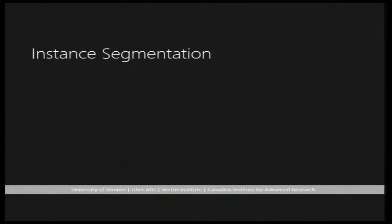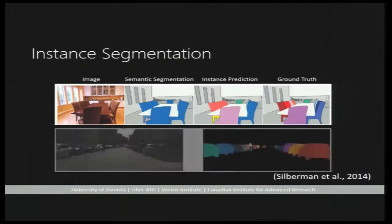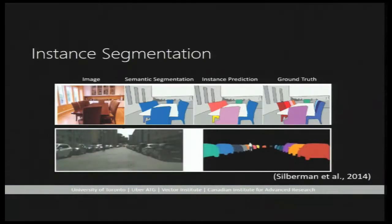Instance segmentation is a fundamental computer vision problem which aims to assign pixel level instance labeling to a given image. Here's an example of an indoor image. The second picture shows a semantic segmentation which assigns all chairs in the same class, and on the right is the instance segmentation. As you can see, object occlusion is usually the major challenge of this problem.